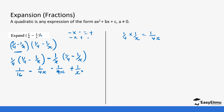Remember: minus times minus gives us positive; minus times positive gives us minus; and positive times positive gives us positive. So we put our like terms together, and our like terms are 1/4x minus 1/4x.